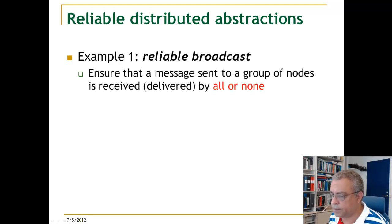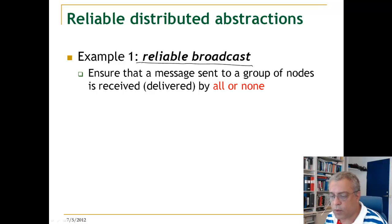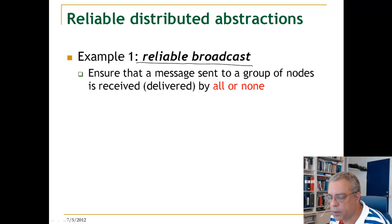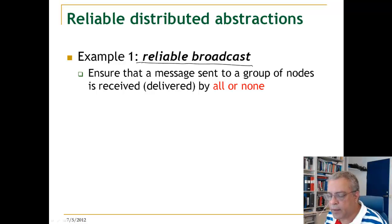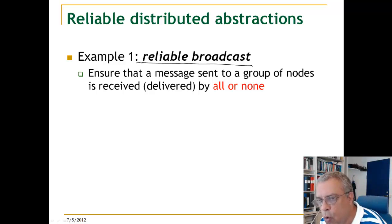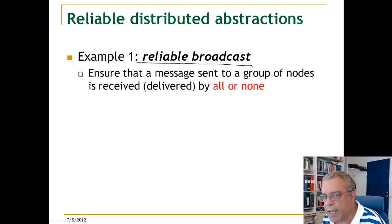So, examples of reliable distributed abstractions. One is reliable broadcast. What reliable broadcast ensures is that we have a group of processes and we can send a message to all the processes in the group, and we want to ensure the broadcast is reliable. Meaning that if a message is sent to a group of nodes, the message is received — or delivered — by all the nodes, or by none. So all nodes will have the same view about the messages received.